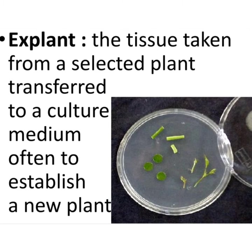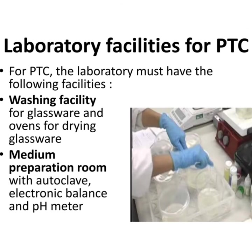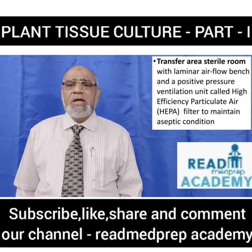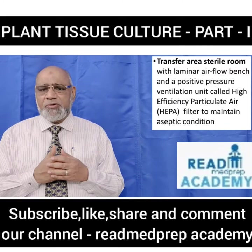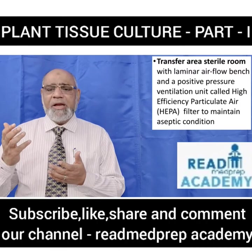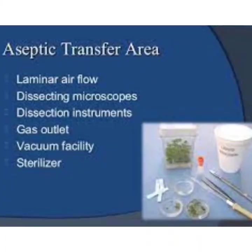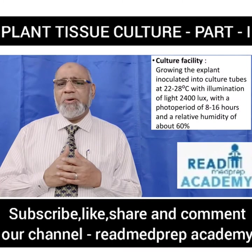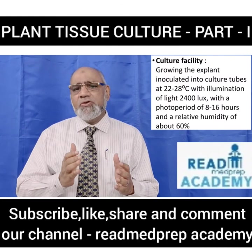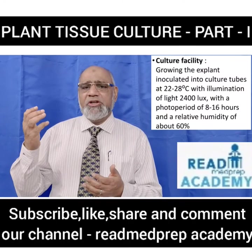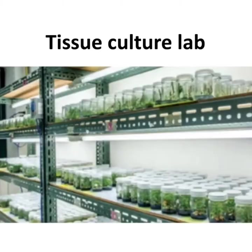Laboratory facilities for plant tissue culture include a washing facility for glassware, ovens for drying glassware, a medium preparation room with autoclave, electronic balance and pH meter, and a sterile transfer area with a laminar airflow bench and a positive pressure ventilation unit — the HEPA (High Efficiency Particulate Air) filter — to maintain aseptic conditions. The aseptic transfer area should have laminar airflow, dissecting microscopes, dissection instruments, gas outlet, vacuum facility, and sterilized supplies. The culture facility requires growing explants at 22–28°C with illumination of about 2400 lux, a photoperiod of 8–16 hours, and relative humidity of about 60%.